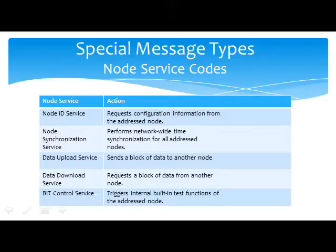In addition to the health message, a number of other special message types are defined by ARINC 825. These simplify file transfer, enable synchronization of multiple devices on the bus, and checking on the presence and health of the various devices on the bus. Note that the health message is used to check the health of the CAN communications, whereas the bit control service checks the health of the device — for example, smoke detectors.